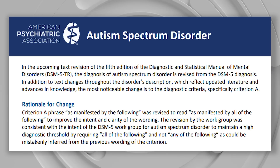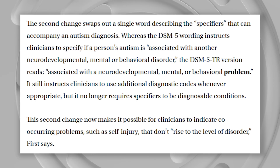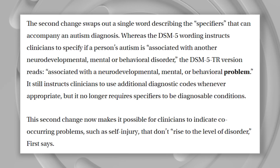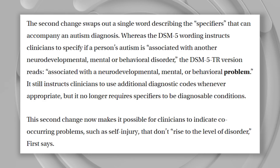Something a little more interesting that was changed is mentioned in the Spectrum article. The second change swaps out a single word describing the specifiers that can accompany an autism diagnosis. Whereas the DSM-5 wording instructs clinicians to specify if a person's autism is 'associated with another neurodevelopmental, mental, or behavioral disorder,' the DSM-5-TR version reads 'associated with a neurodevelopmental, mental, or behavioral problem.' It still instructs clinicians to use additional diagnostic codes whenever appropriate, but it no longer requires specifiers to be diagnosable conditions. This makes it possible for clinicians to indicate co-occurring problems, such as self-injury, that don't rise to the level of a disorder.